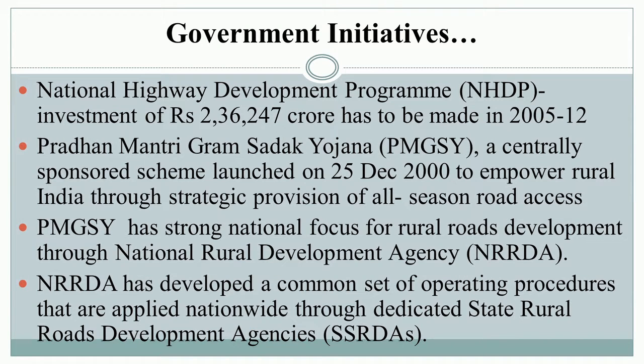The Government of India identified rural roads as one of the six components of Bharat Nirman, with a goal to provide connectivity to all habitations with a population of 1,000 persons and above in plain areas, and 500 persons and above in hilly or tribal areas, within all-weather roads. The National Highway Development Program saw investment of 2,36,247 crores between 2005 and 2012. Pradhan Mantri Gram Sadak Yojana, a centrally sponsored scheme launched in 2000, aimed to empower rural India through strategic provision of all-season road access through a national rural road development agency.